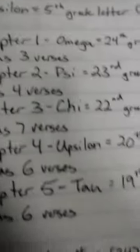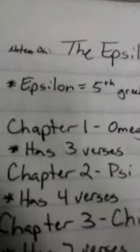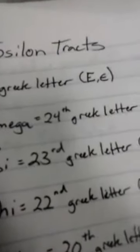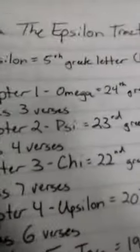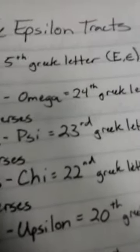Now, in the Epsilon tracks, I didn't, I haven't heard too many people mention that the names of the chapters, you have Omega, Psi, Chi, Upsilon, and Tau, right? And then Epsilon. Epsilon is the fifth Greek letter of E. Then you have Omega, you know, 24th letter, 23rd letter, 22. Now, here's where it gets interesting.